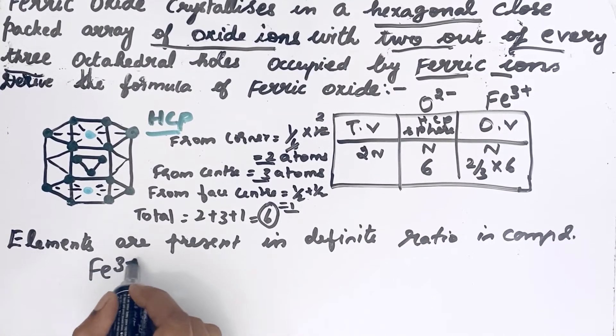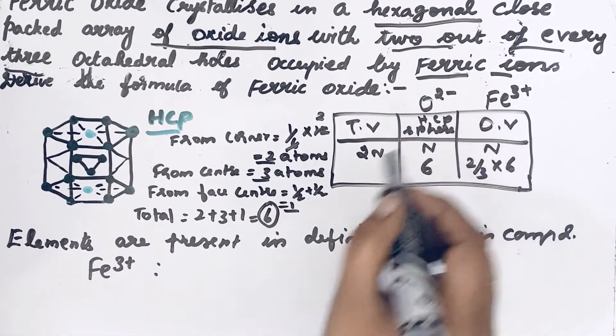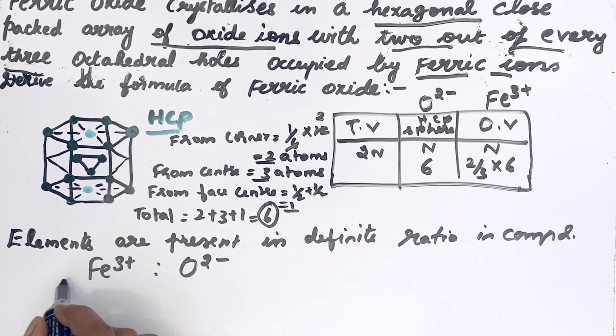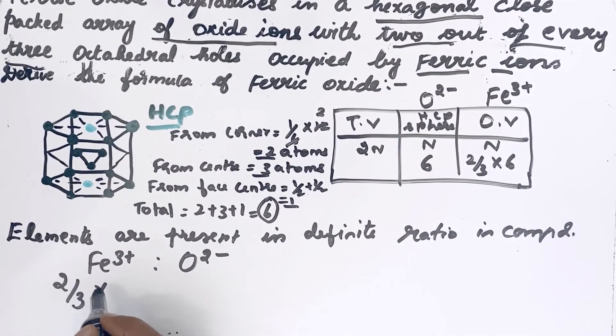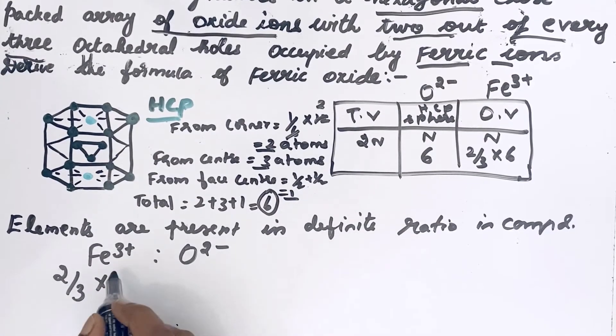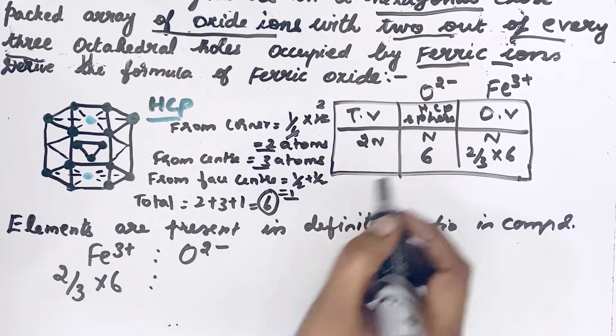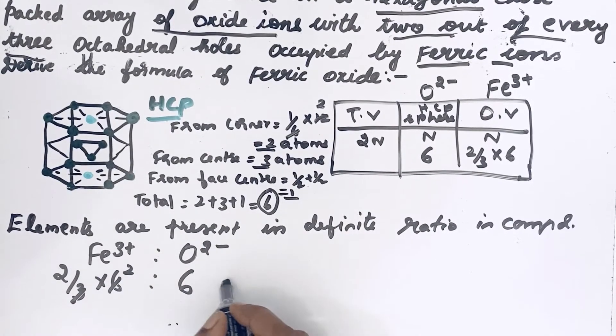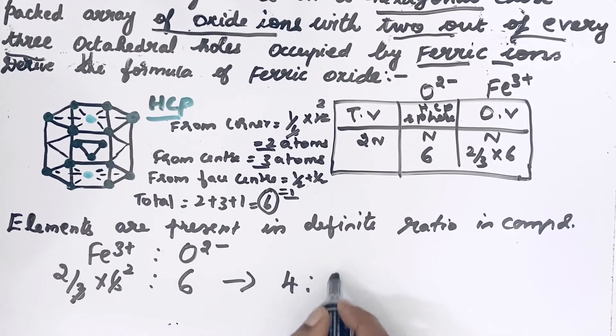Fe³⁺ is to O²⁻. Fe³⁺: 2/3 × 6. O²⁻: 6. This gives 4 to 6.